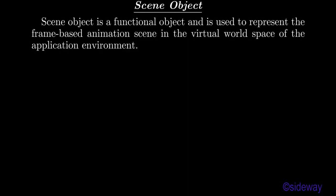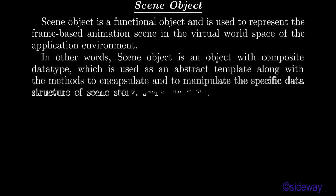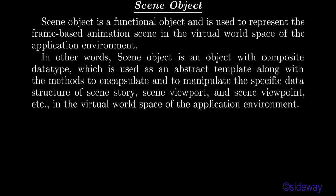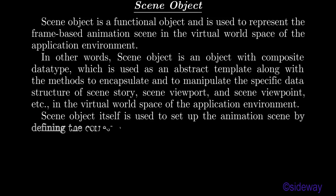Scene object is a functional object used to represent the frame-based animation scene in the virtual world space of the application environment. It is an object with composite data type, used as an abstract template along with the methods to encapsulate and manipulate the specific data structure of scene story, scene viewport, and scene viewpoint, etc. Scene object itself is used to set up the animation scene by defining the corresponding attributes accordingly.